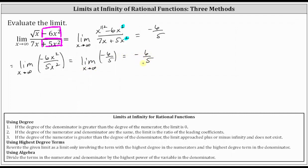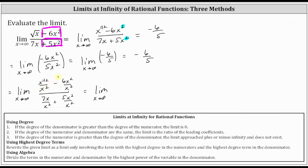The third method, the more algebraic method, is to divide every term in the numerator and denominator by the highest power of x in the denominator, which in this case is x squared. We will divide every term in the function by x squared, using the form where the square root is written as x to the power of 1/2. Simplifying: x to the 1/2 divided by x squared equals 1 divided by x to the power of 3/2. Negative 6x squared divided by x squared is negative 6. In the denominator, 7x divided by x squared simplifies to 7 divided by x, and 5x squared divided by x squared simplifies to 5.